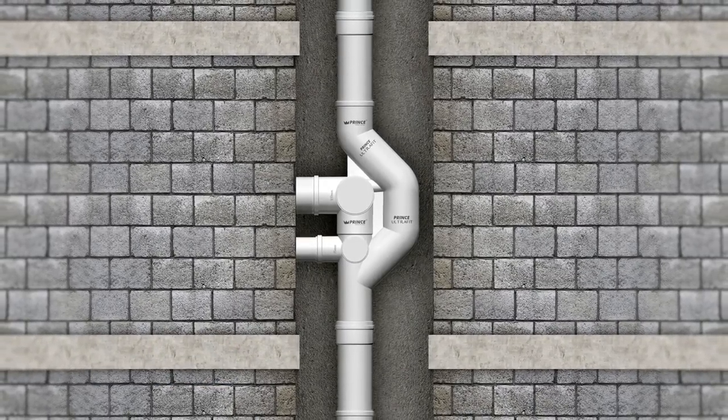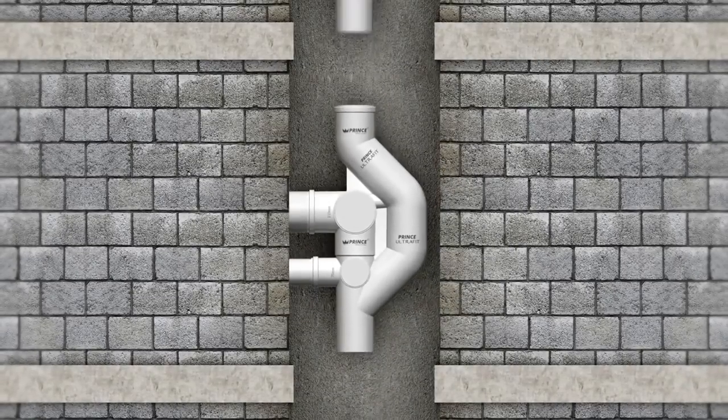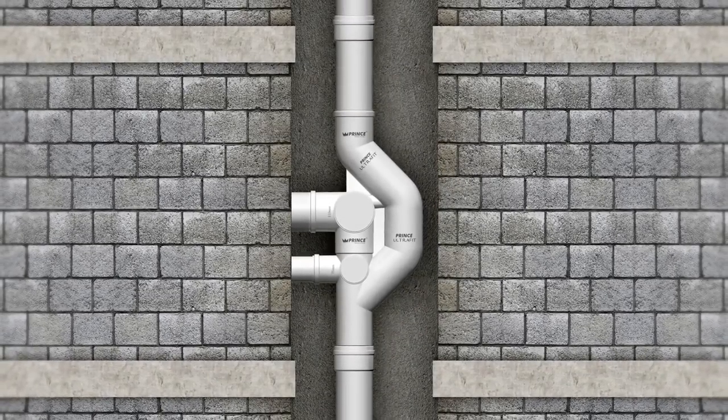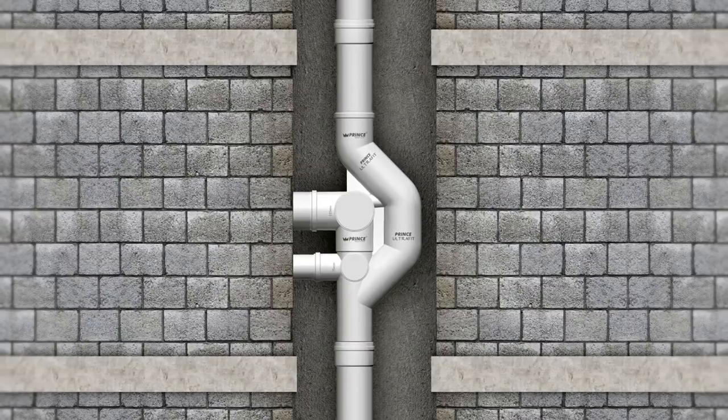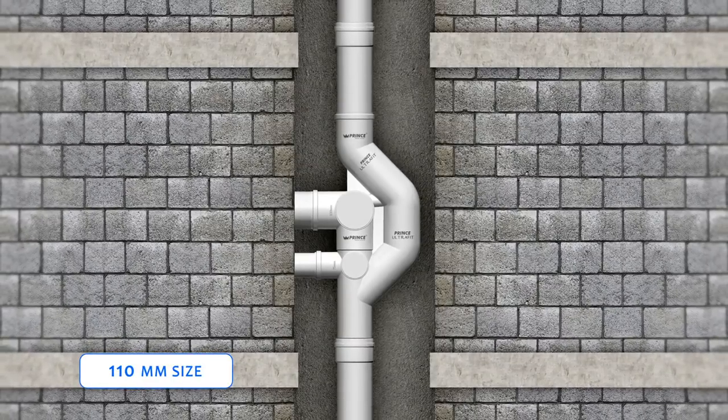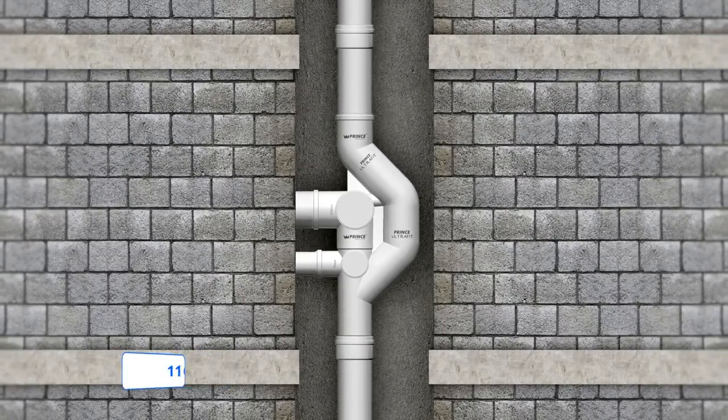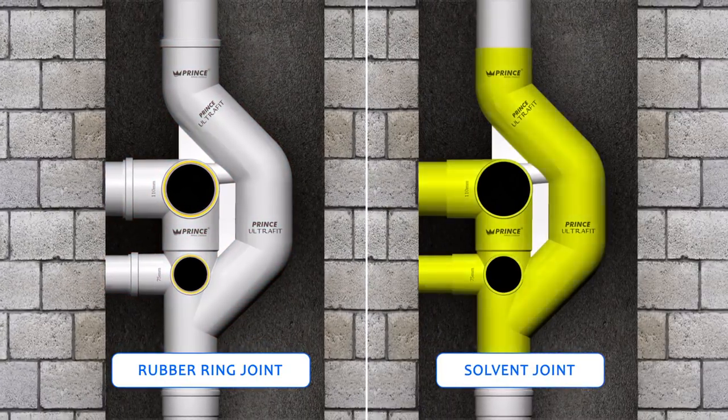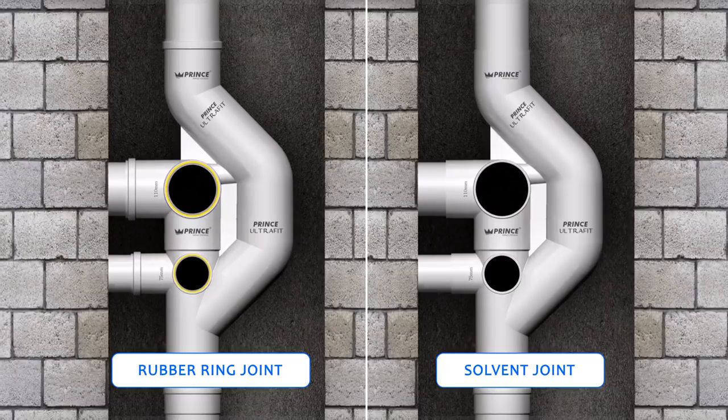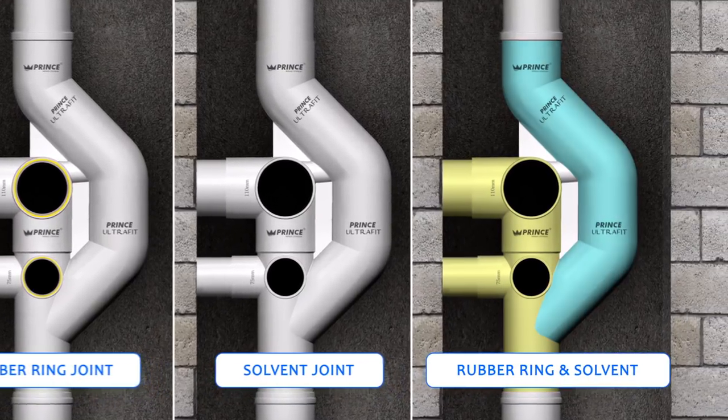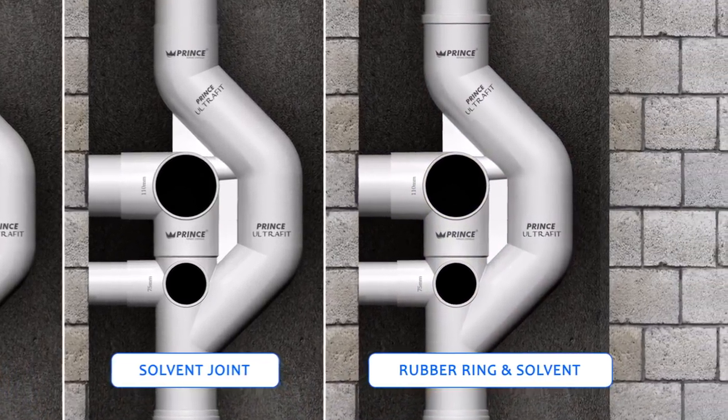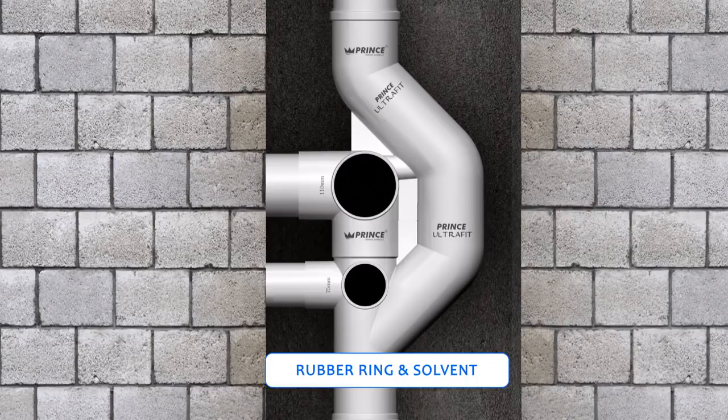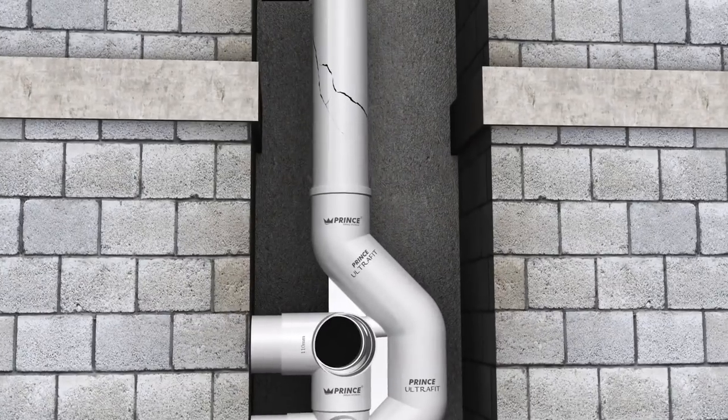In addition to the above benefits, Aerator is easy to install with flexibility of space and reduction in joints. It comes in 110 millimeter size and is available in rubber ring joint and solvent joint. Prince Pipes is the only company which combines both rubber ring and solvent joint into one.